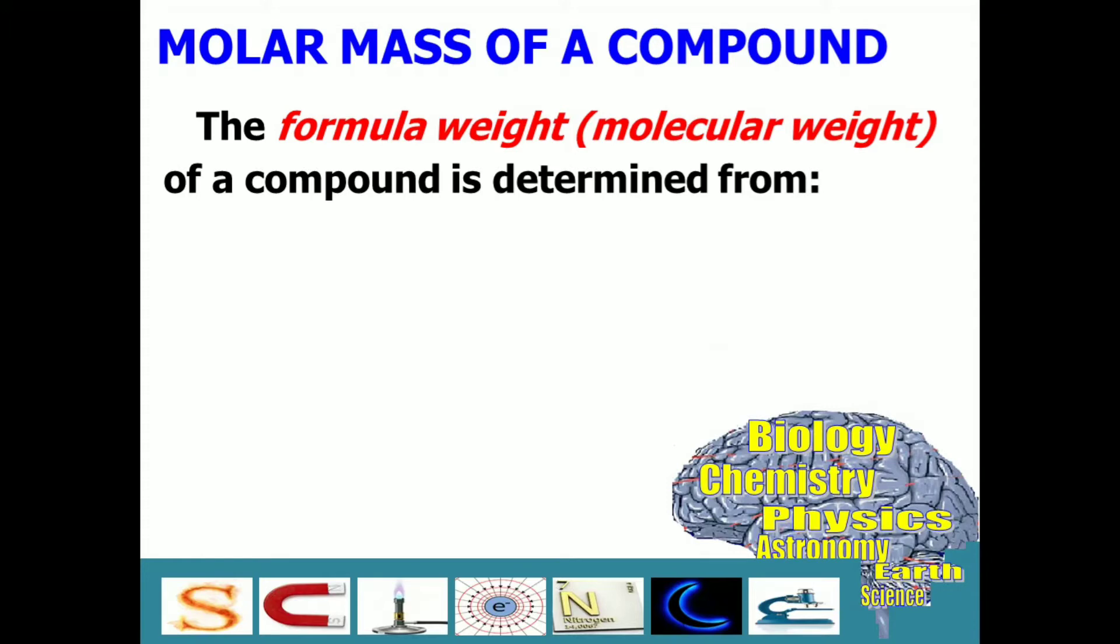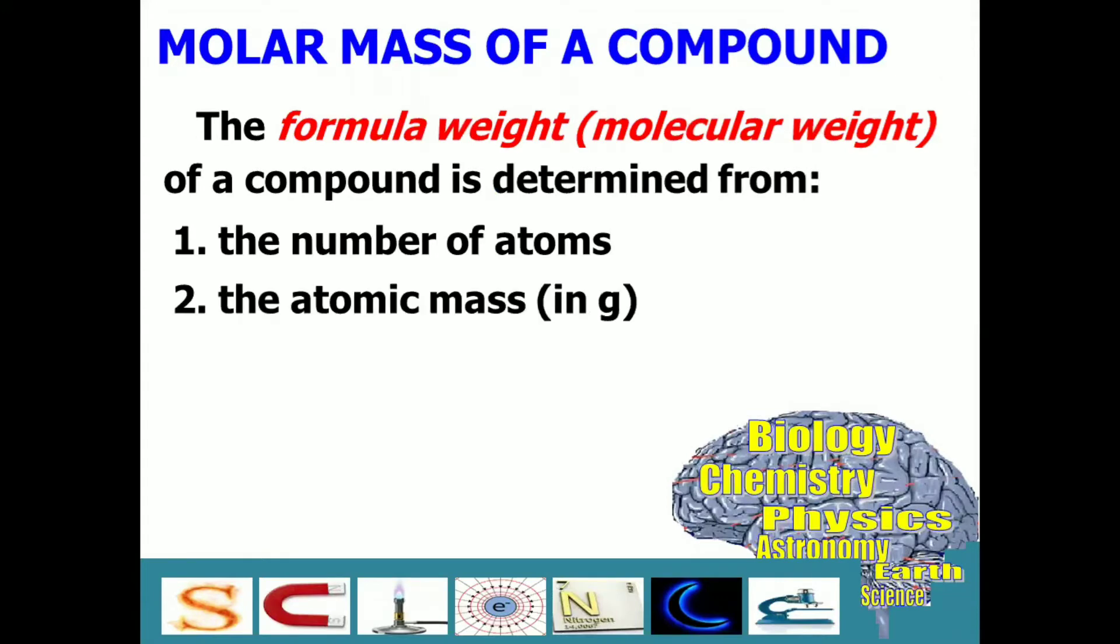For us to determine this, we need two important data: the number of atoms and the atomic mass, which is in grams. The number of atoms is based on the chemical formula, while the atomic mass you have to check in the periodic table of elements.